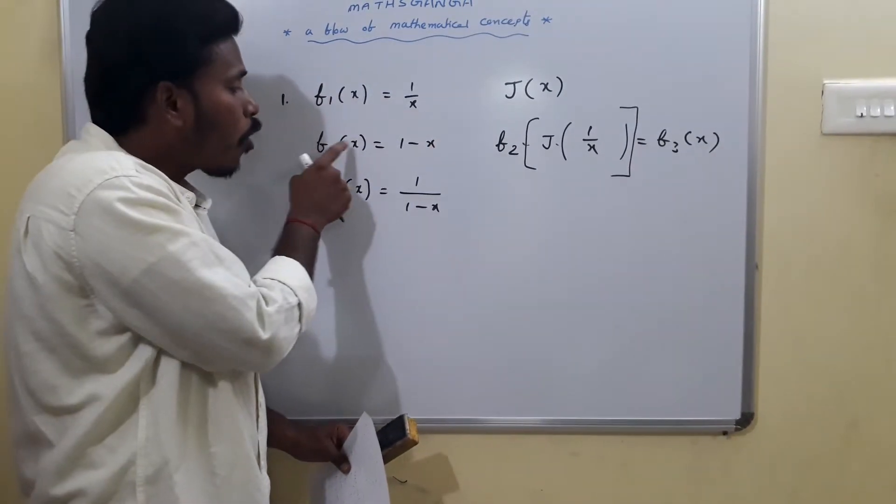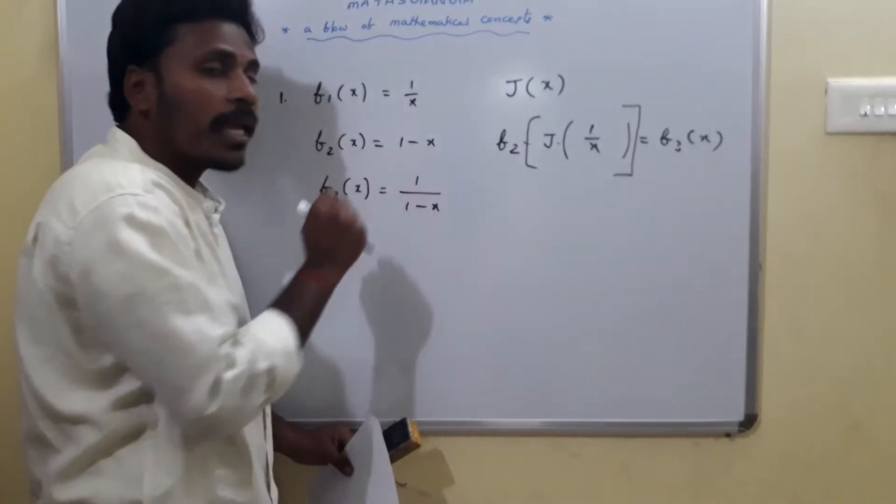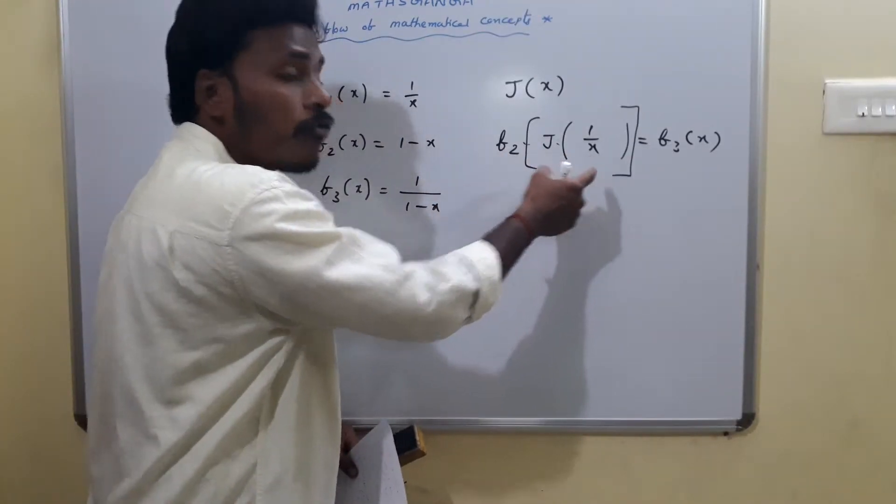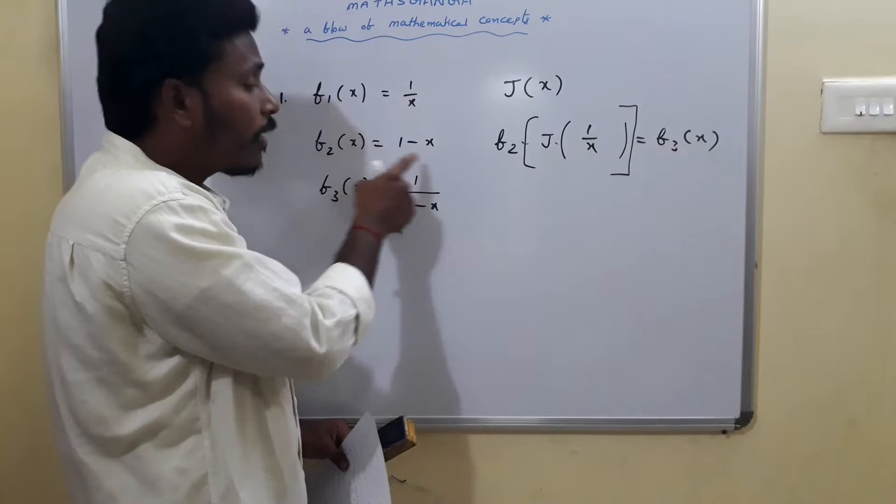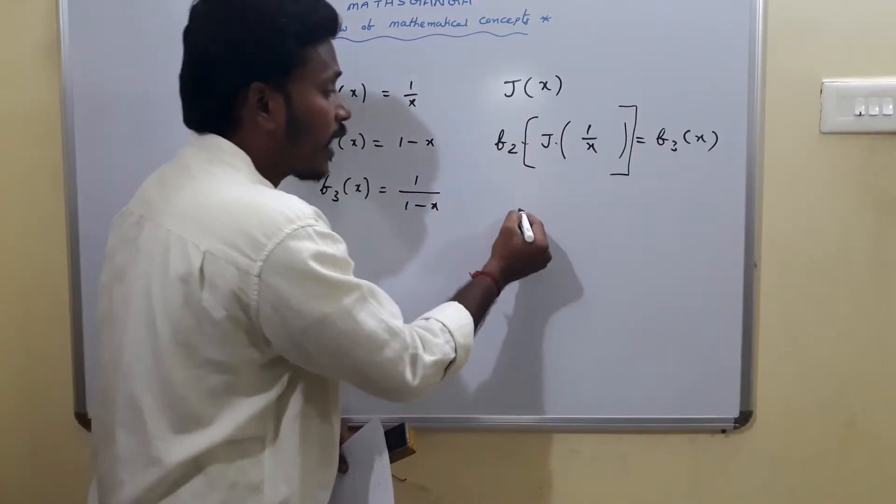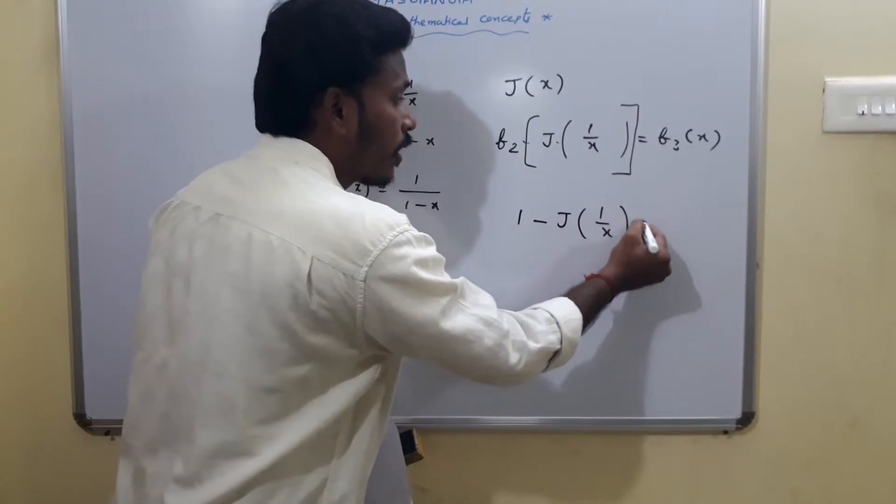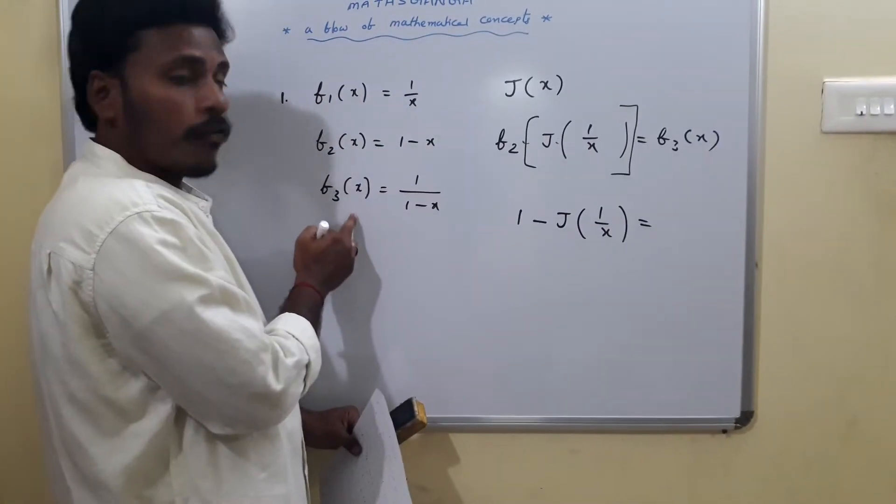Now coming to this, F2 of x is given as 1 minus x, but what I have here? F2 of J of 1 by x. By the definition of F2, I will write it like 1 minus J of 1 by x is equal to F3 of x.